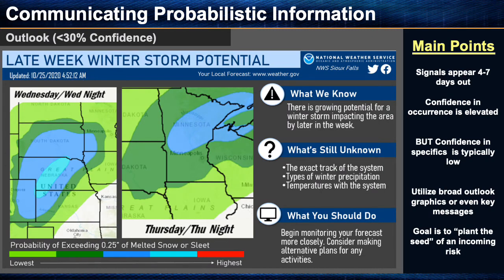We'll start with the first stage of messaging, called the outlook phase. Generally at this stage, your forecast confidence is pretty low at less than 30%. It's a stage where we are starting to see signals for impactful weather and really want to start hinting at the possibility that it could happen. The phrases in your messages should echo your confidence level — avoid using certainty terms such as 'will' or 'expect,' and instead use terms such as 'possible' or 'may.' For synoptically driven storms, you may be able to begin messaging these events as far as three to seven days in advance, though this timescale could be compressed in mesoscale-driven mixed precipitation events.